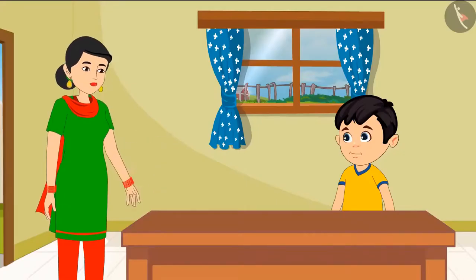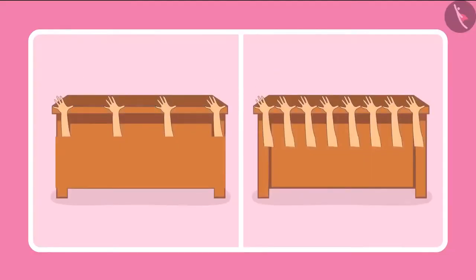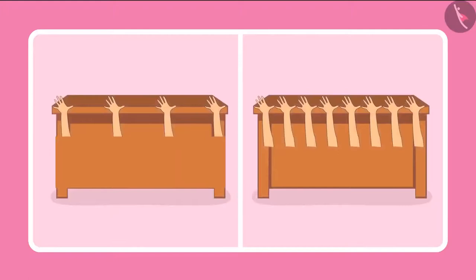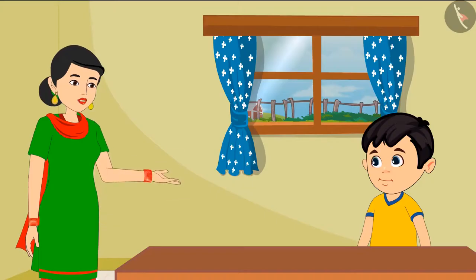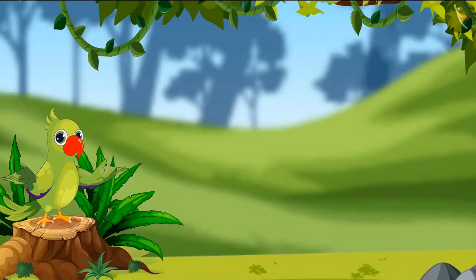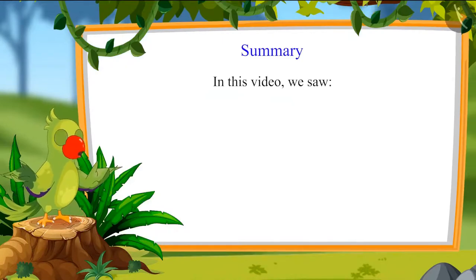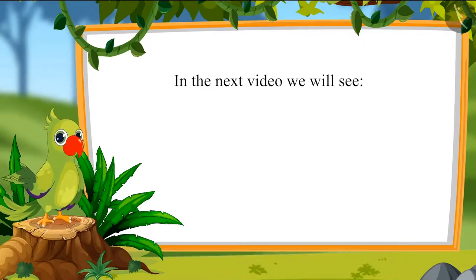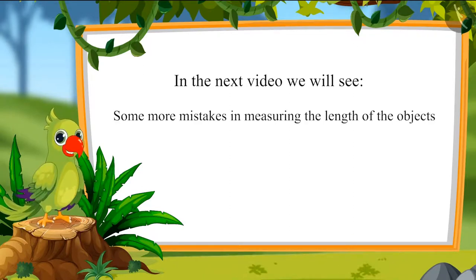Now you understood Chotu. While measuring objects, we should not leave space between two hands. If we do not measure the entire length or miss any space in between, then the measurement will be wrong. Okay mummy, this means that whenever a measurement is to be made, there should not be any space left between two measures. You are absolutely right Chotu. So children, you should not leave a space between two handspans because that measurement might go wrong. So children, that was all for today. In this video, we saw some common mistakes in measuring the length of the objects. In the next video, we will see some more mistakes in measuring the length of the objects that should be avoided. Bye children.